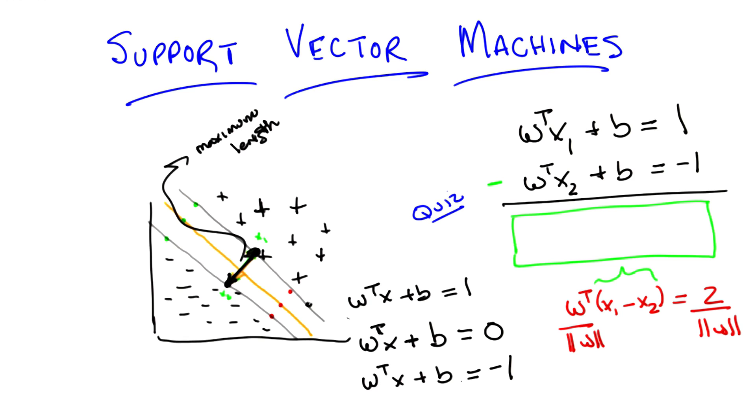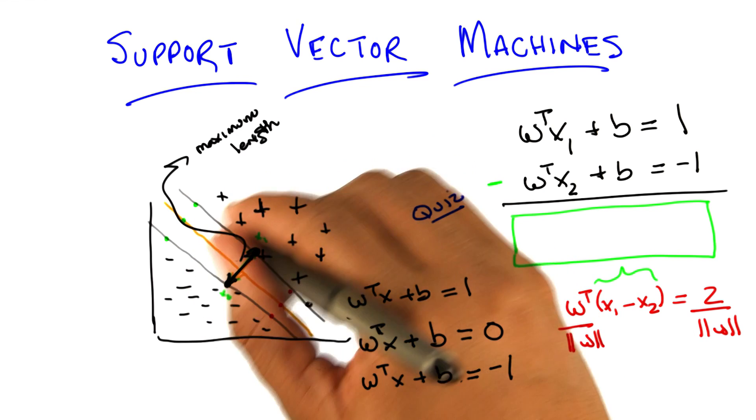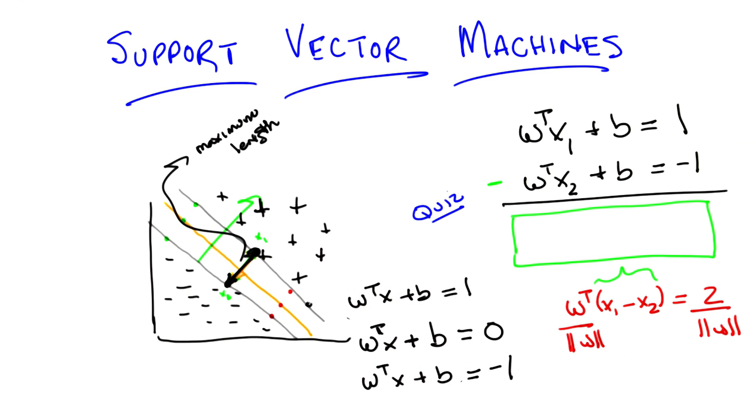So what we've just done is found the length of x1 and x2 in the w direction. What do we know about w with relationship to the line? W is the parameters of the line. Yes, but in particular, as with any hyperplane, w represents a vector that's perpendicular to that.